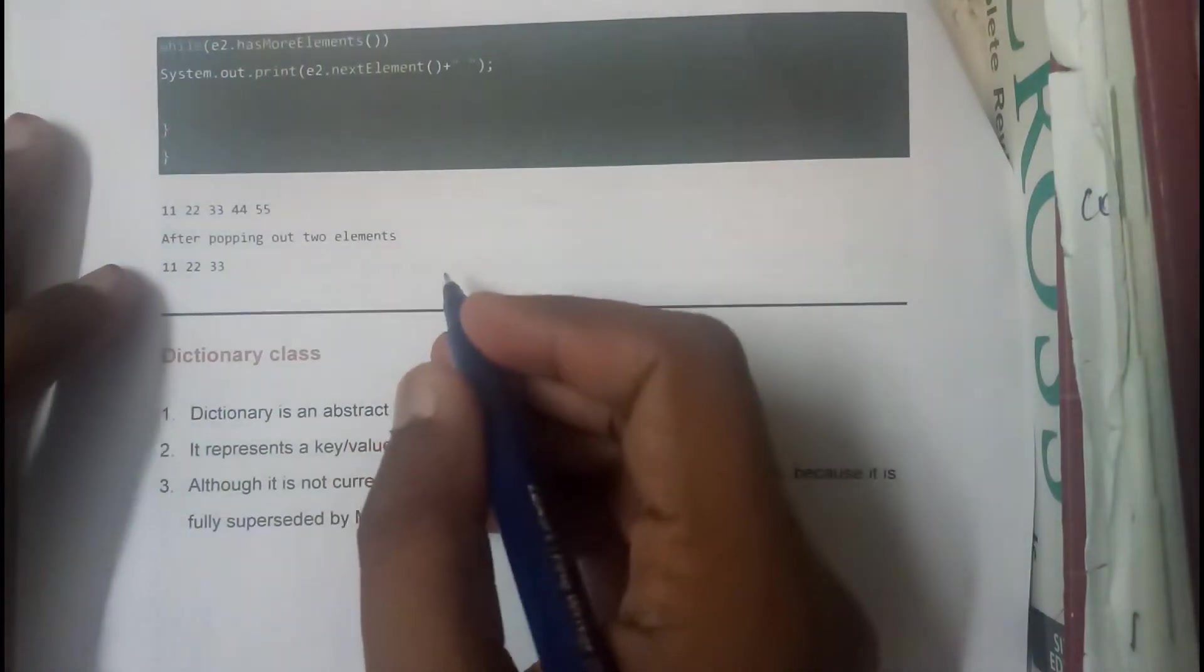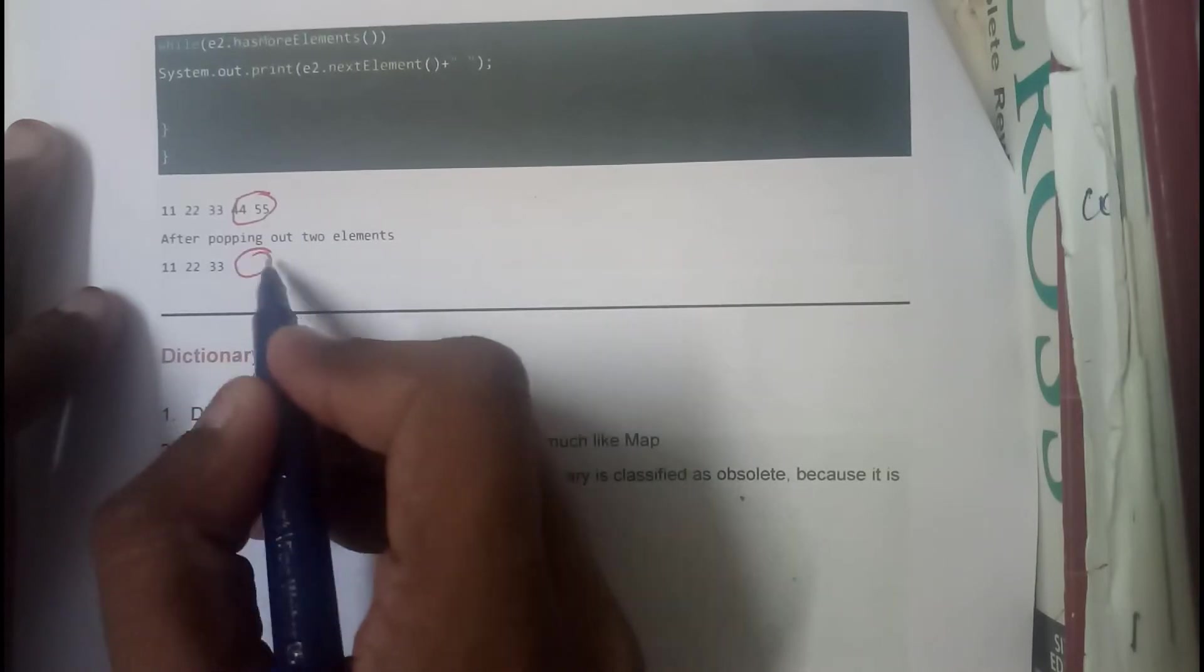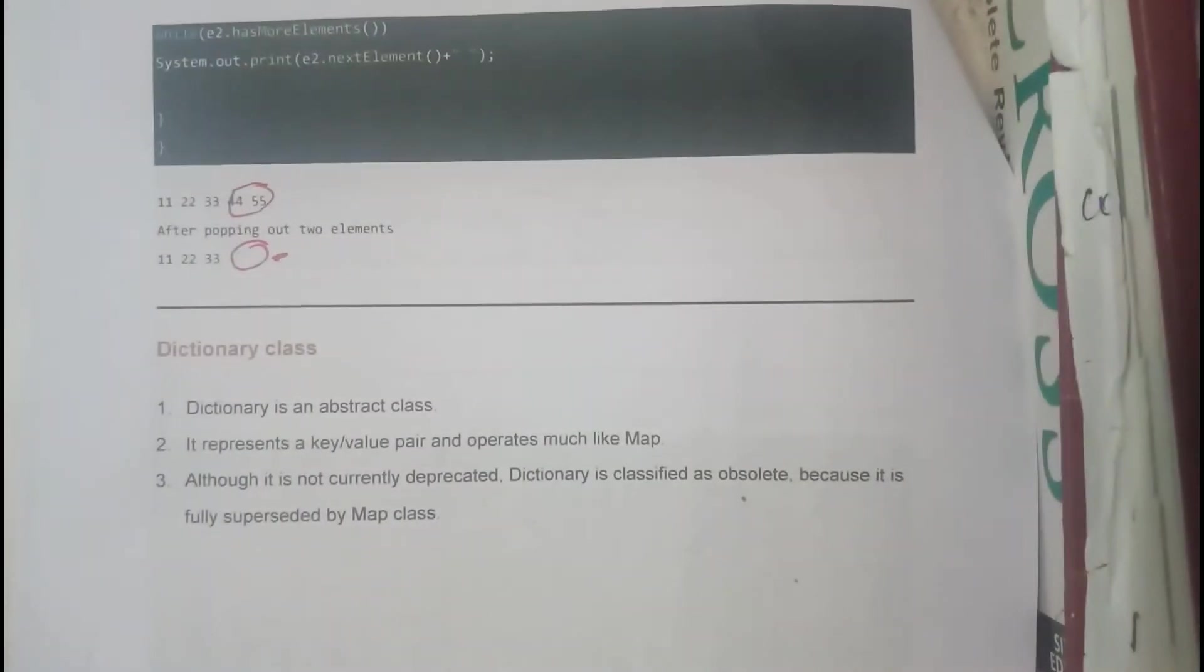We are trying to display all the elements after popping the 2 elements. I have told you that the latest things that came inside will be leaving first. These 2 are the last things, so those 2 are not available after popping them. I hope everyone got a clear idea on this.